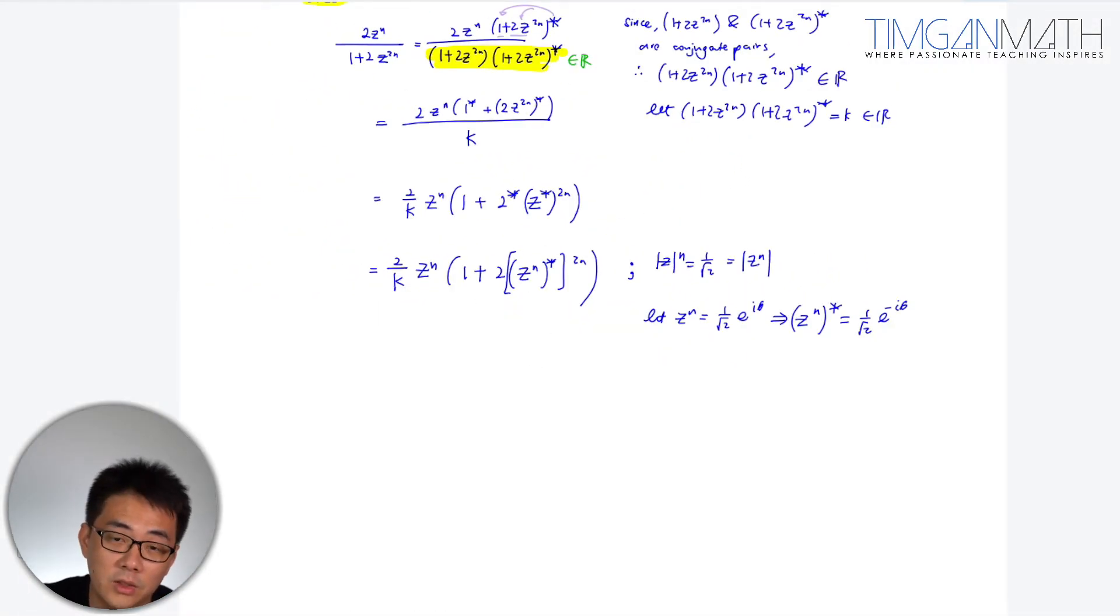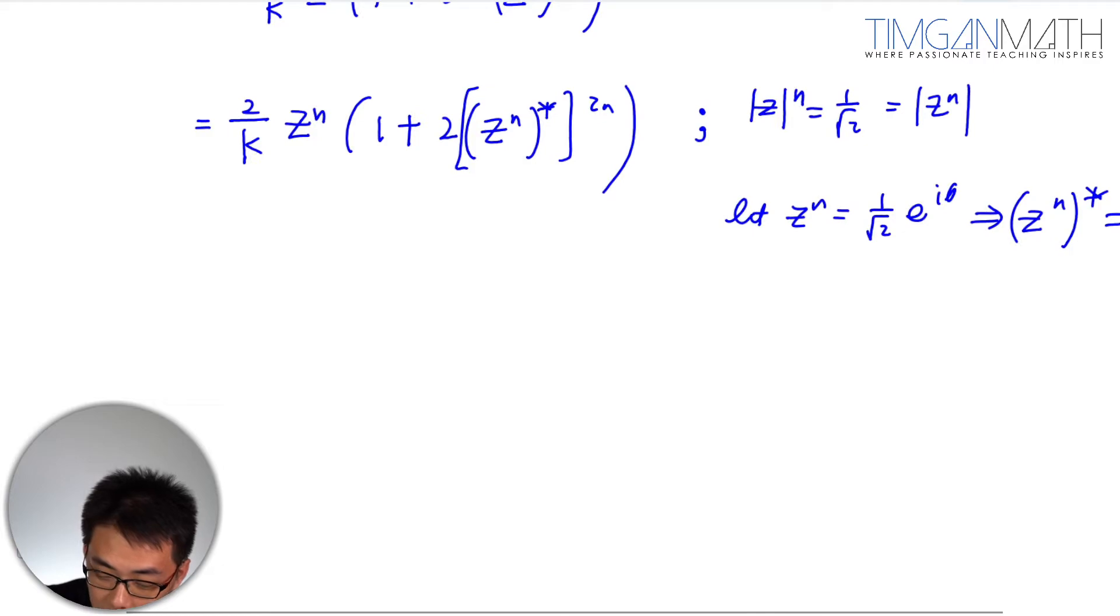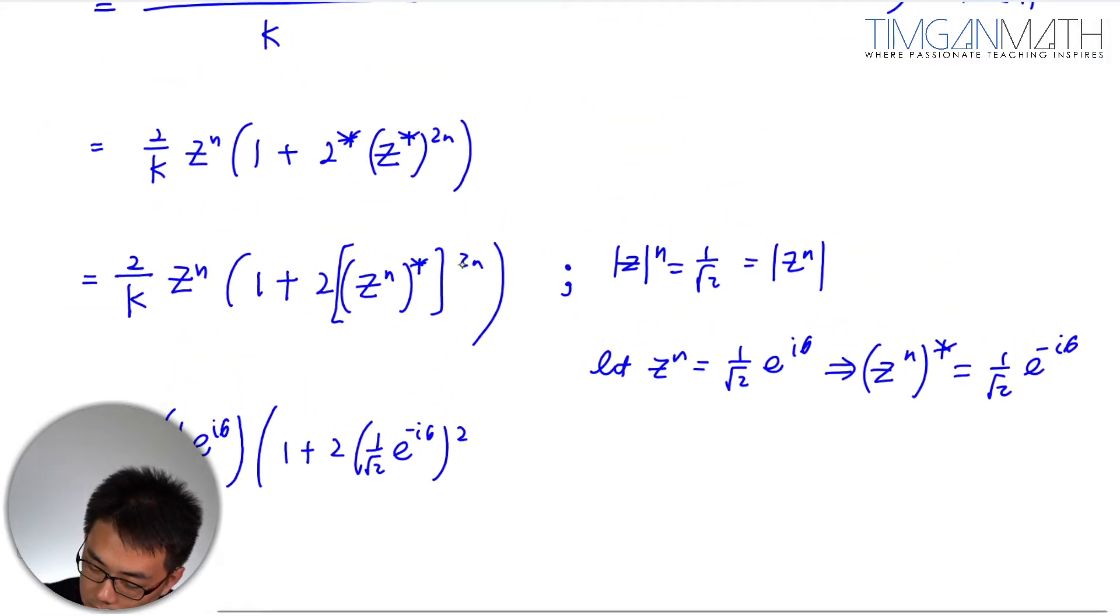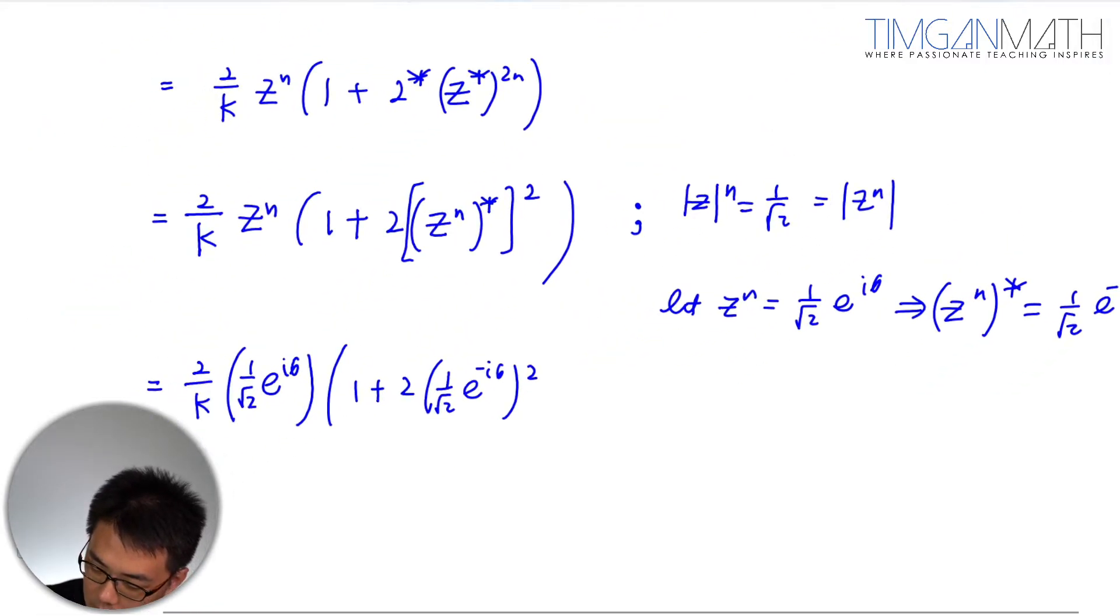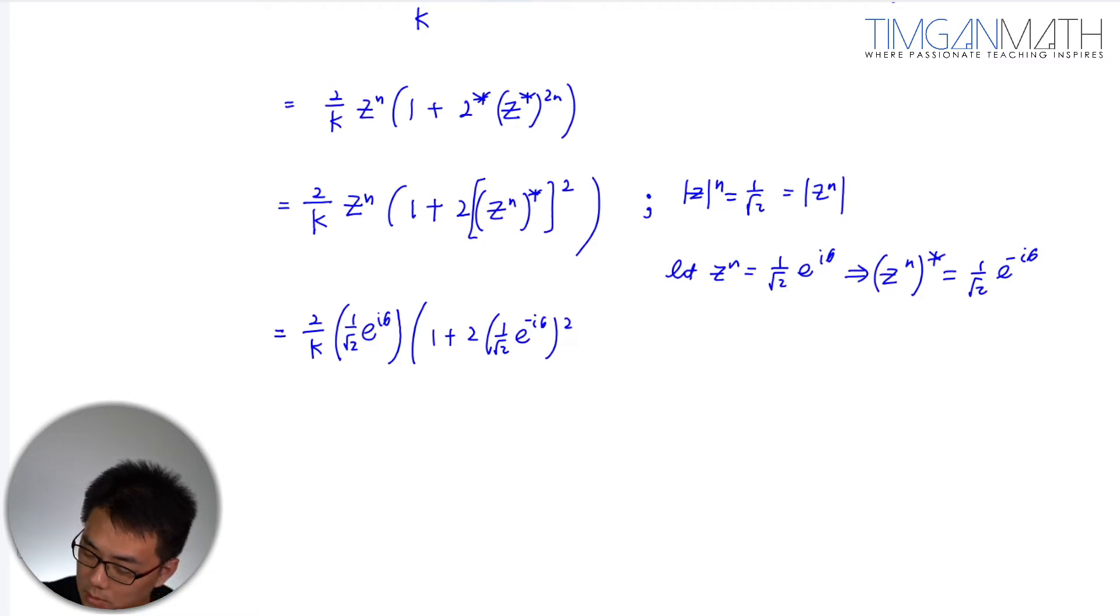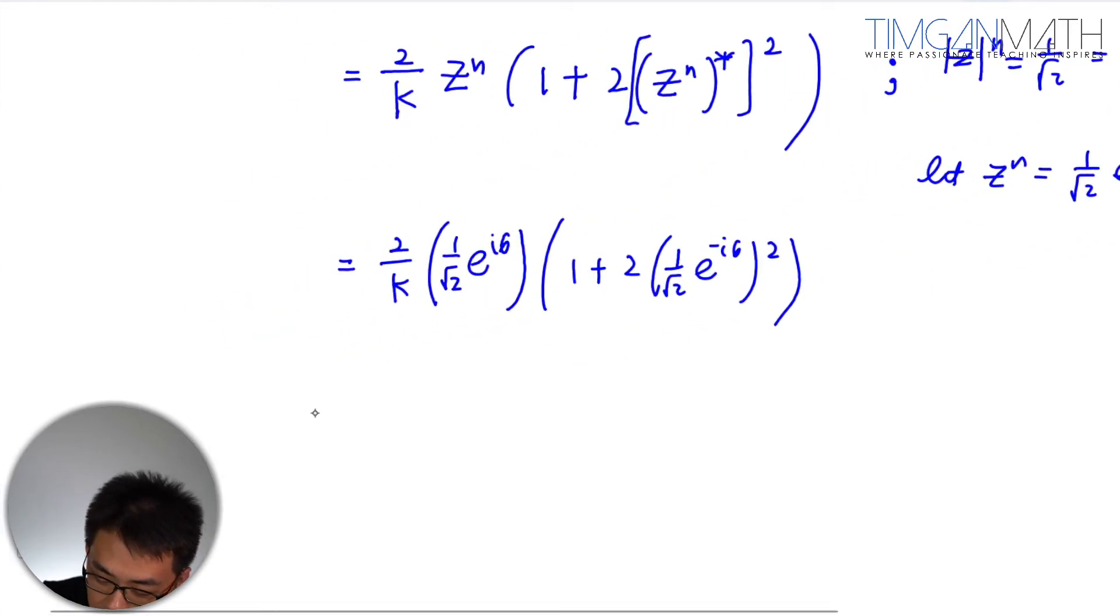Once we've done that, it should be pretty clear. So this is 2/k, z^n could just be 1 over root 2 e^(iθ), and then this would just be 1 plus 2 times (1 over root 2 e^(-iθ))². Then this would be 2. Then we could square each other. The constant can just leave it on top.